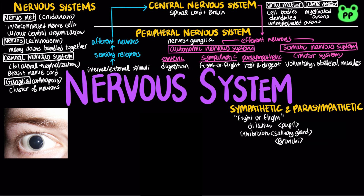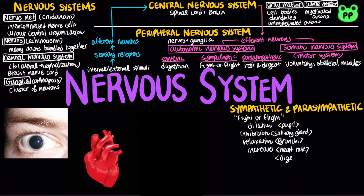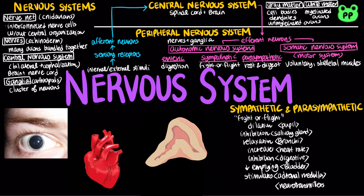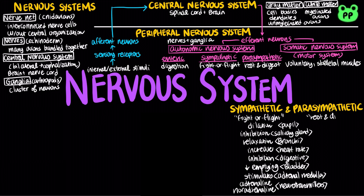The sympathetic nervous system inhibits the salivary gland, relaxes bronchi and lungs, accelerates the heart, inhibits the digestive system, and stimulates the adrenal medulla, which produces the neurotransmitters epinephrine and norepinephrine, also known as adrenaline and noradrenaline.